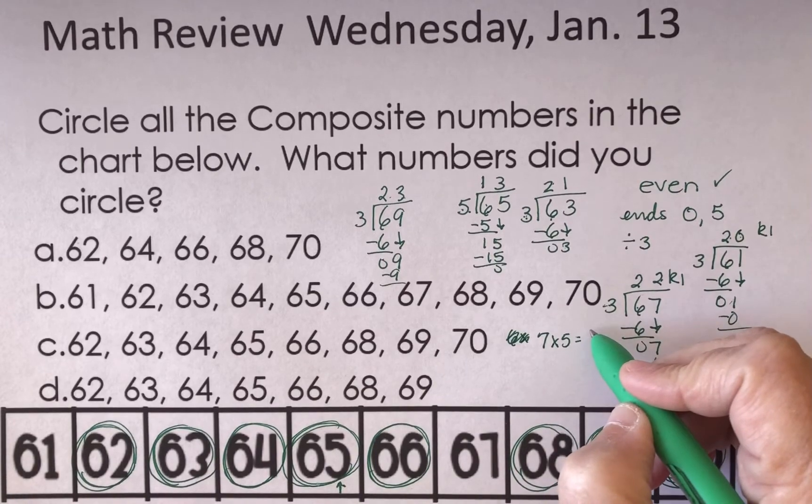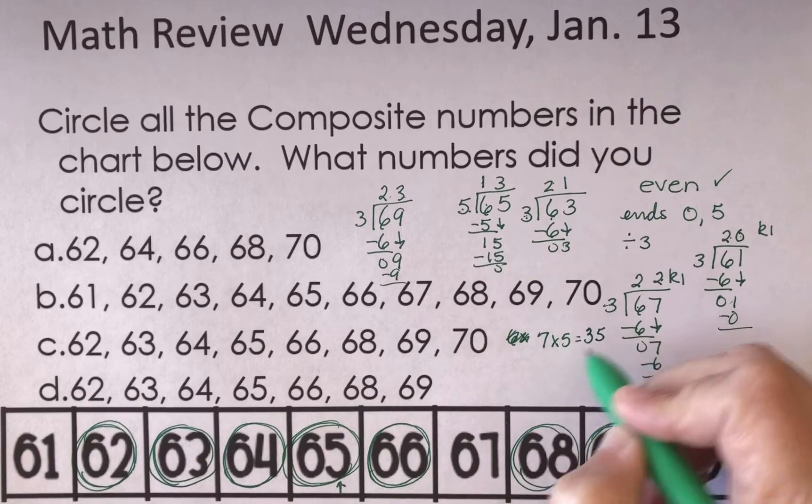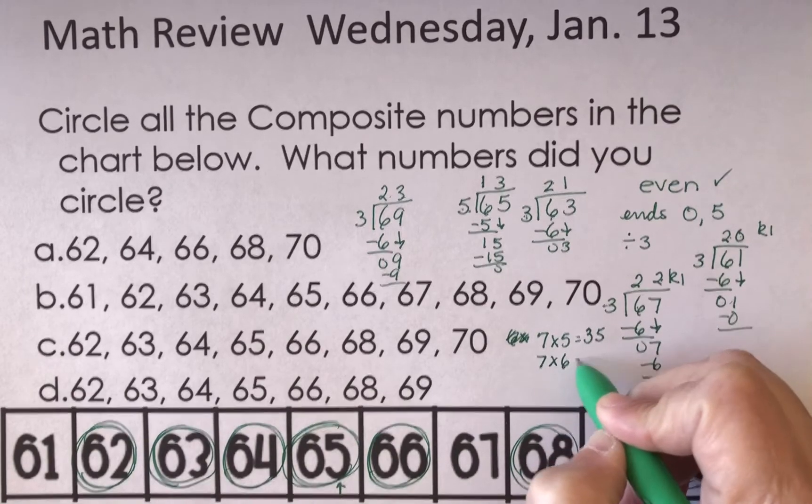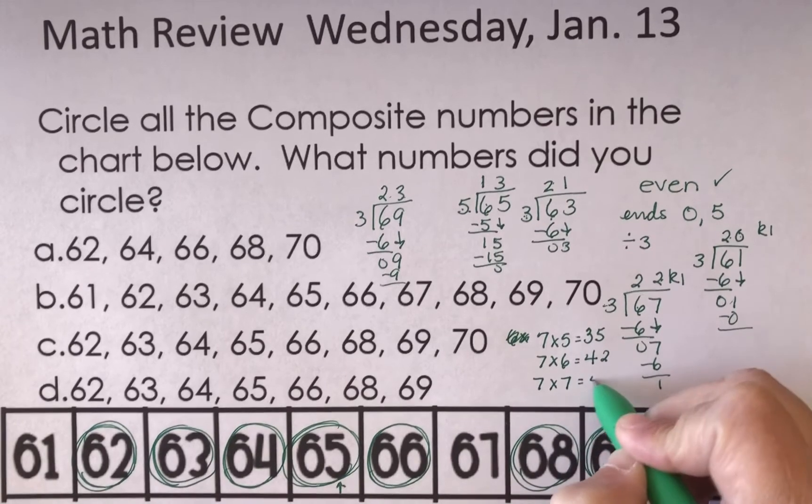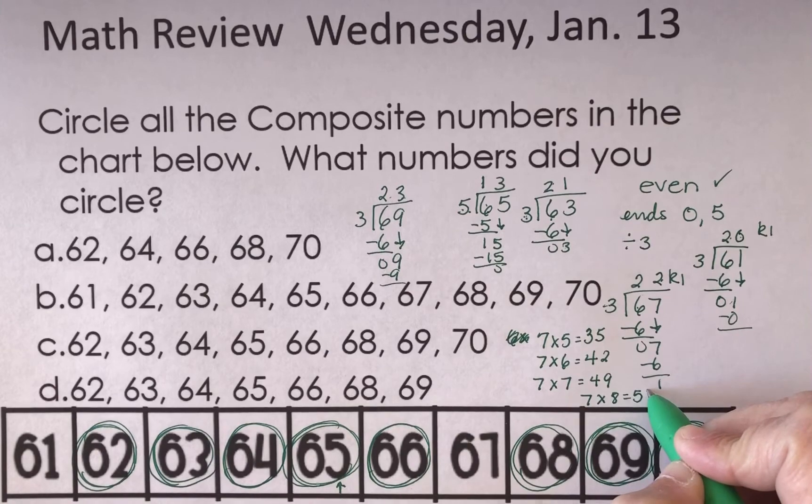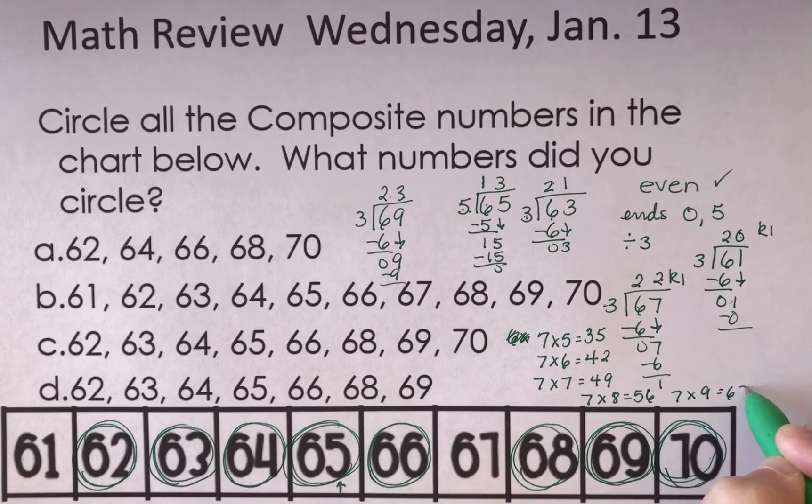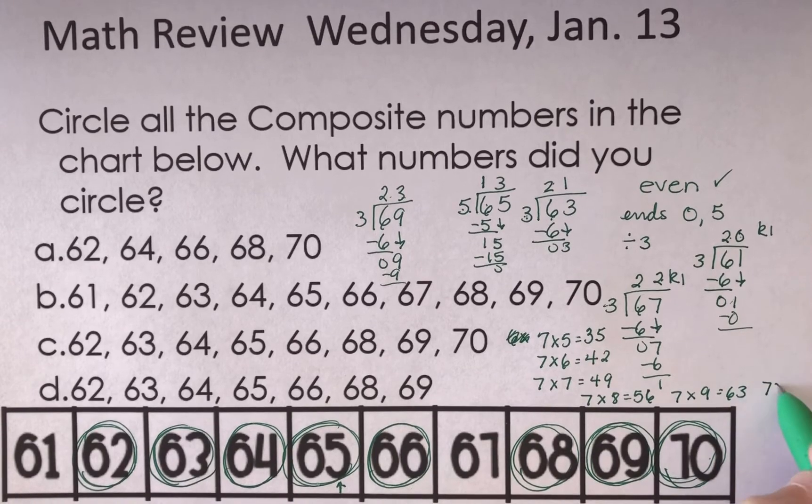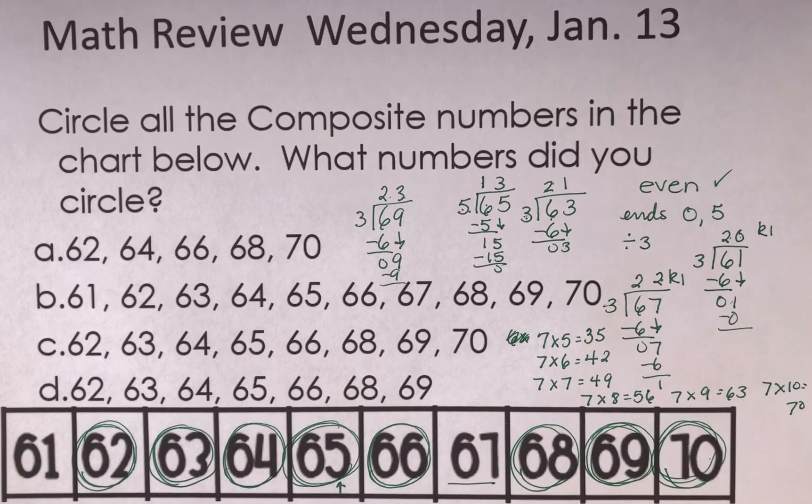7 times 5 is equal to 35. 7 times 6 is 42. 7 times 7 is 49. 7 times 8 is 56. 7 times 9 is 63. 7 times 10 is 70. Nowhere did I get a 67 in there.